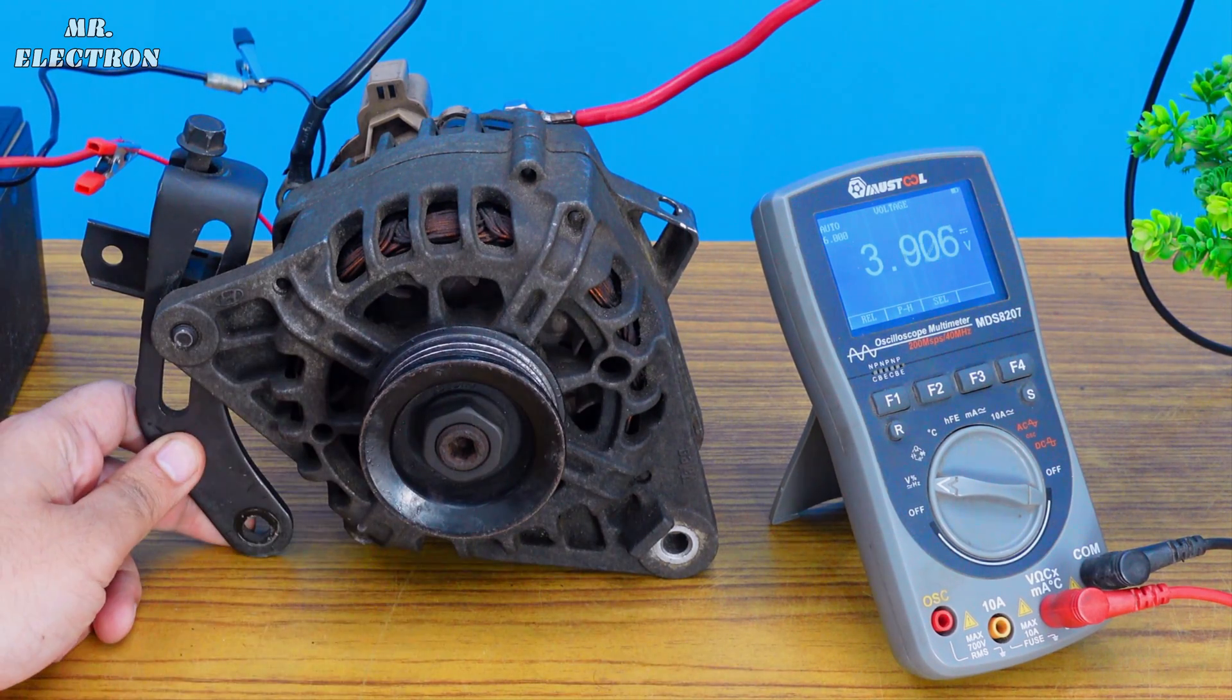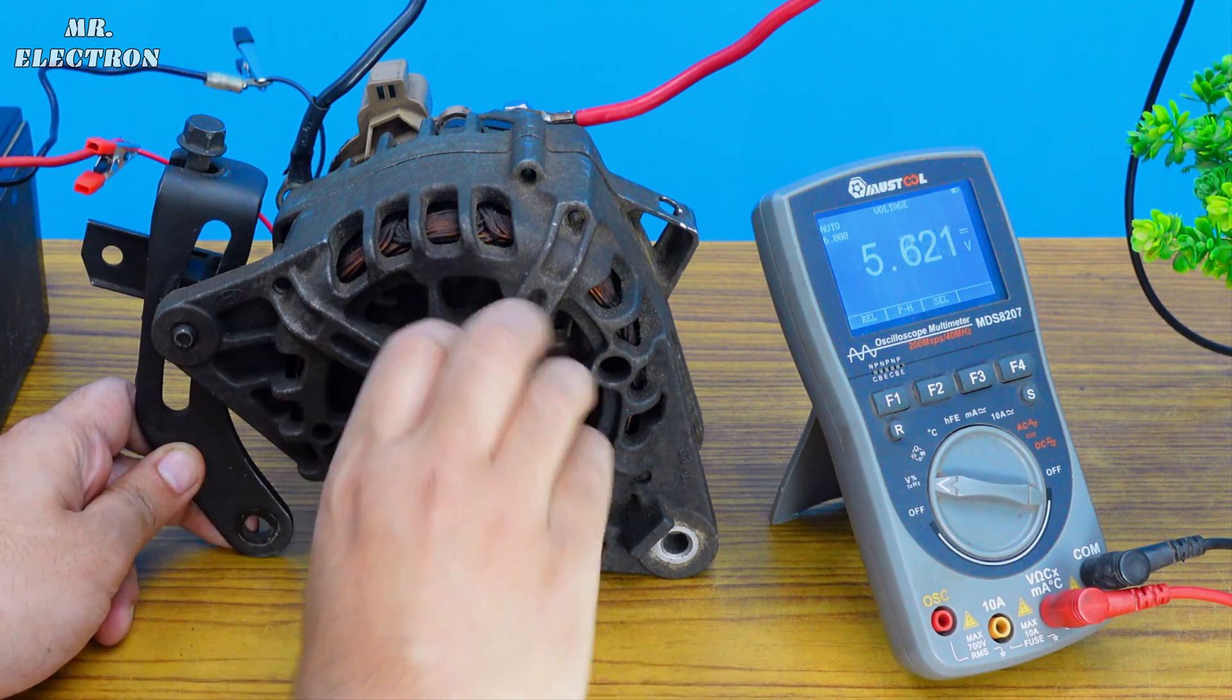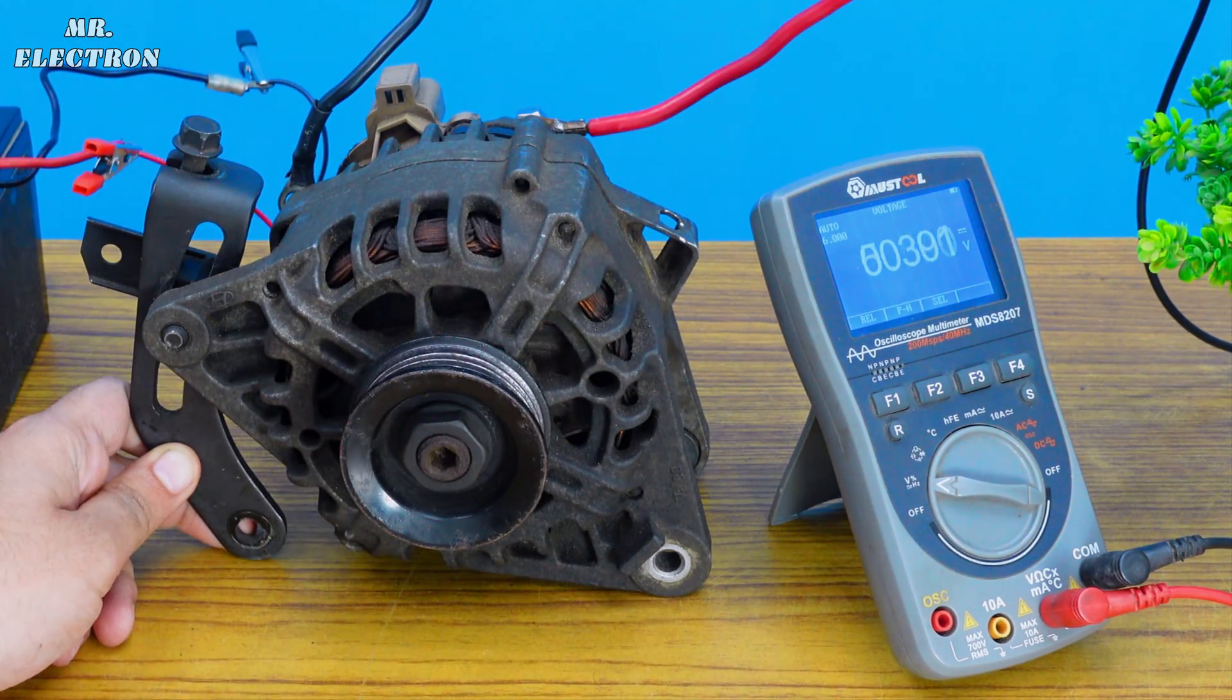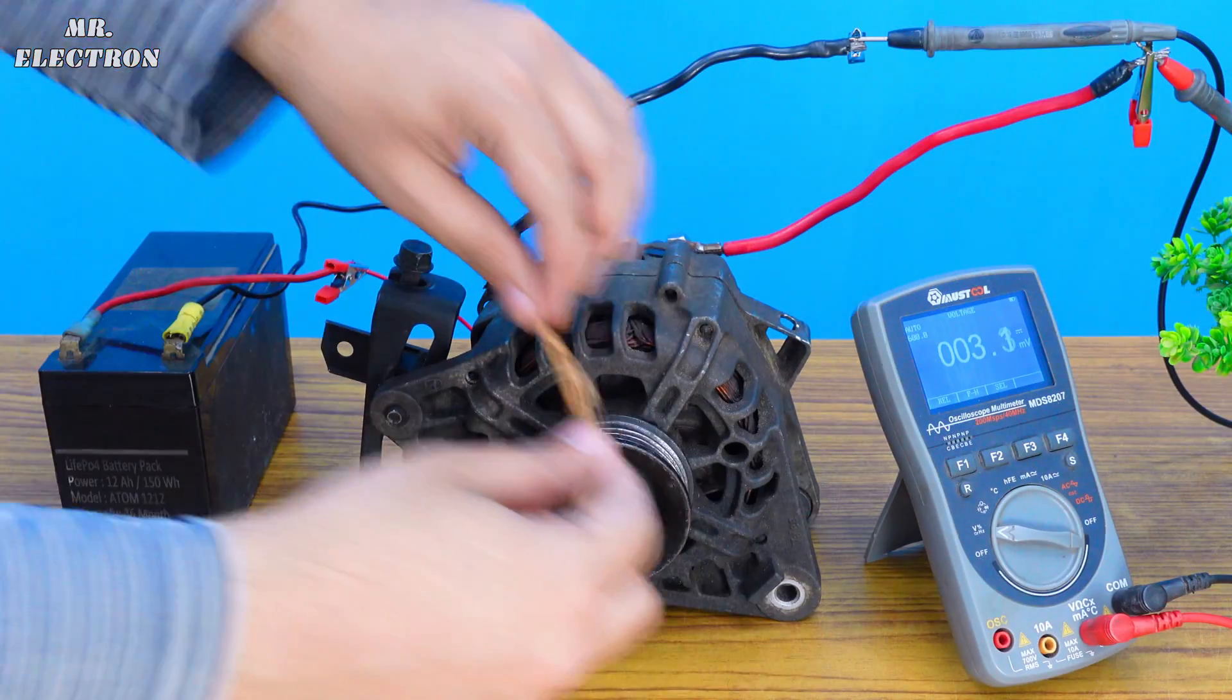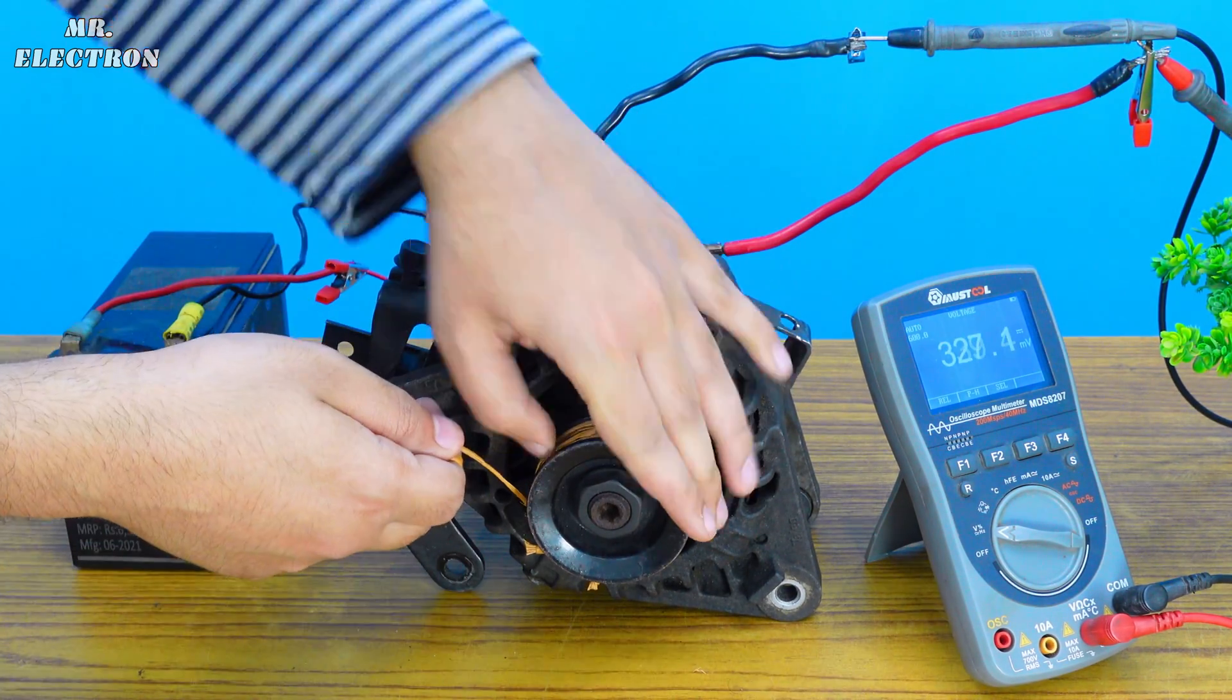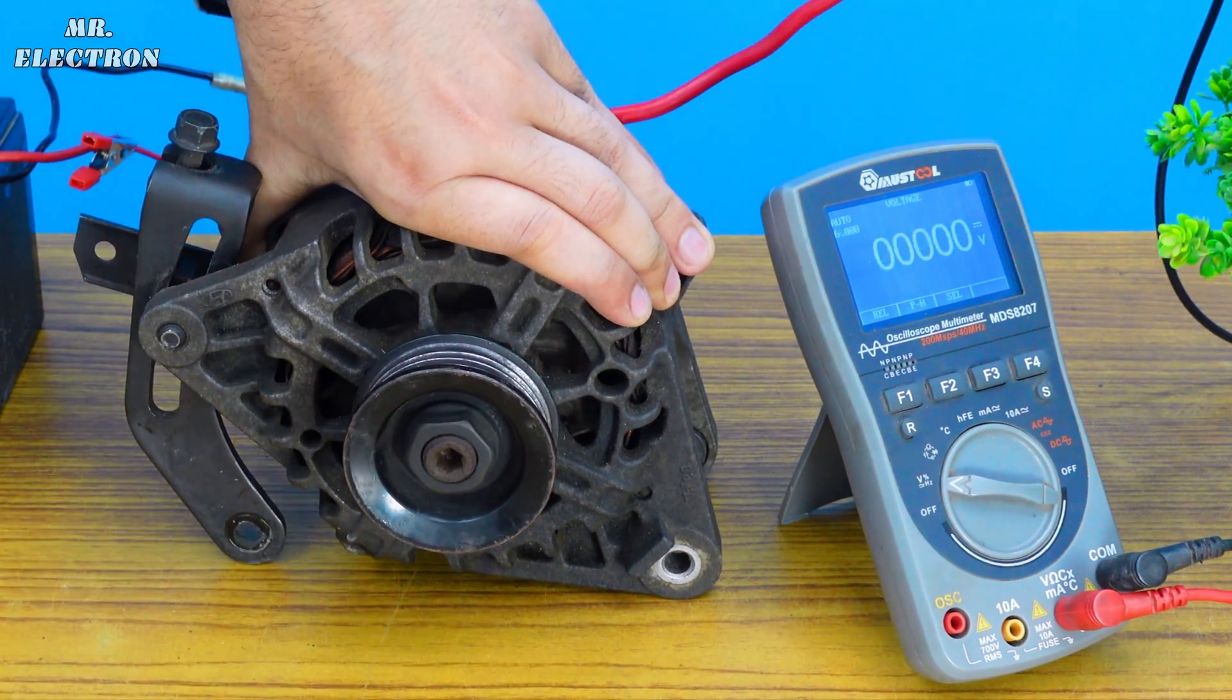Let's see what the max we can do with a simple hand rotation. 5.9 volts, 6.3 volts, good, 6.5 volts, that is huge.